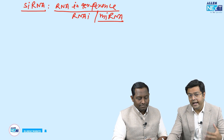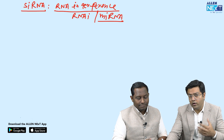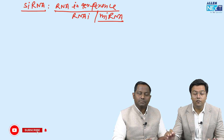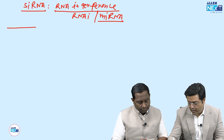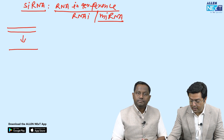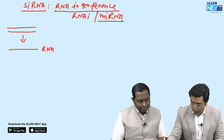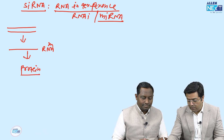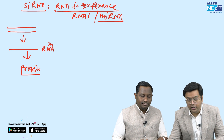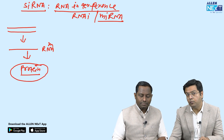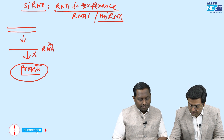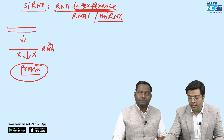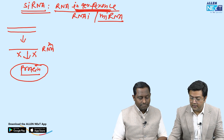What does siRNA do? It interferes with the function of mRNA. A gene produces single-stranded mRNA, and mRNA produces a protein. So this is a new class of drug that inhibits the conversion of mRNA to protein — inhibiting translation by interfering with mRNA function. Earlier drugs inhibited only proteins or enzymes; this drug inhibits translation itself.